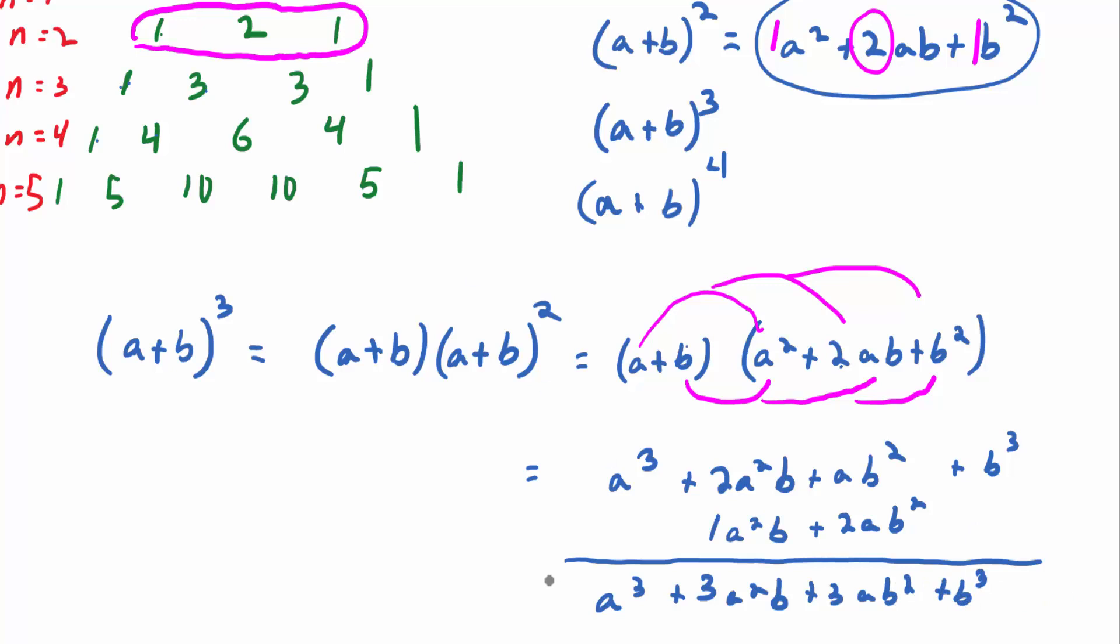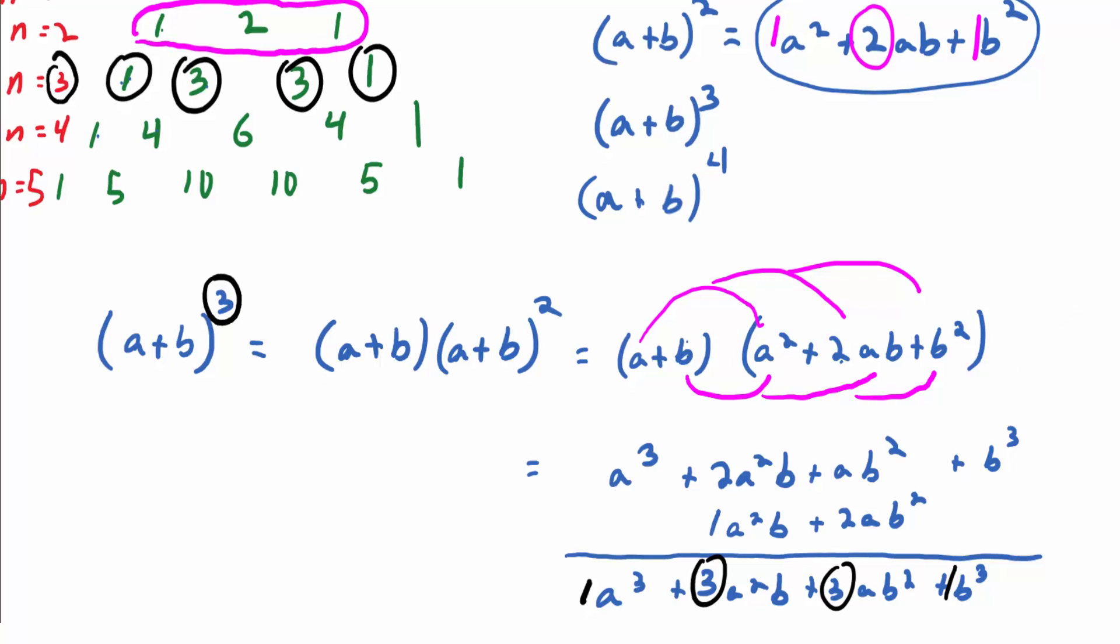And look at the coefficients, you guys. There's 1, 3, 3, and 1. Which exactly match Pascal's triangle in row number 3, the n here corresponding with the exponent here. Okay? Doesn't prove that it works for Pascal's triangle, but it makes you believe it a little more.